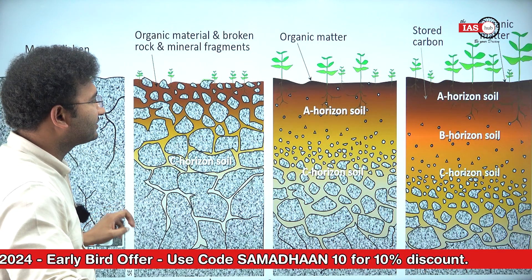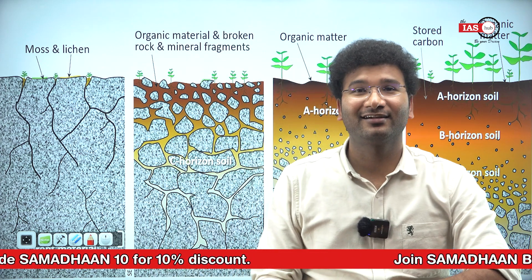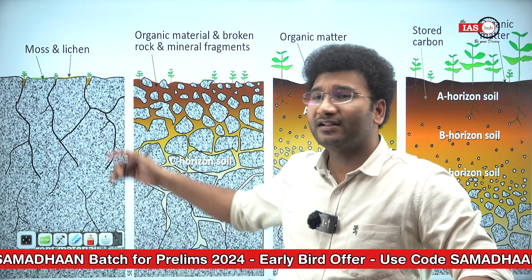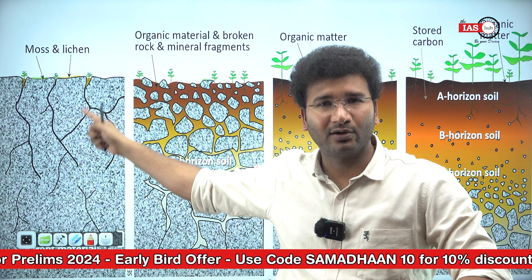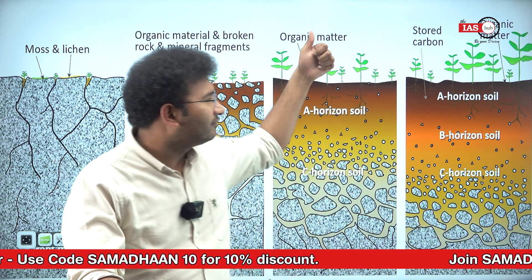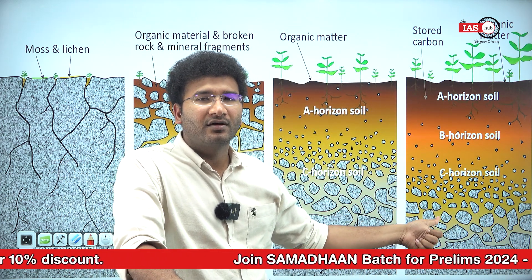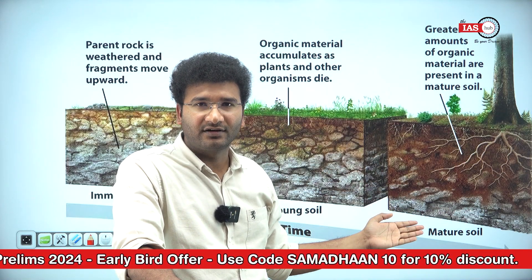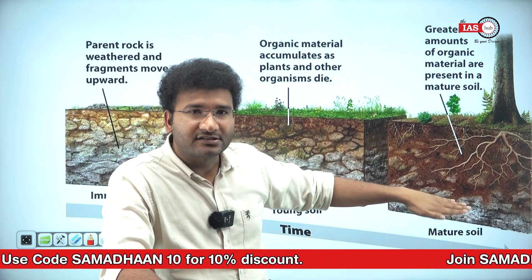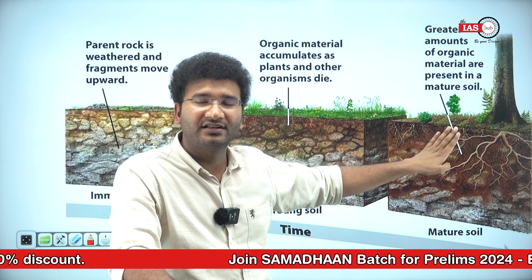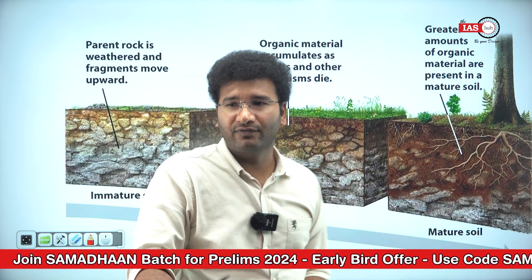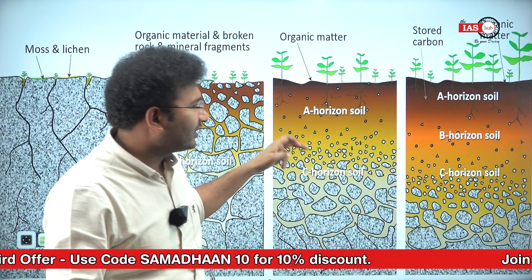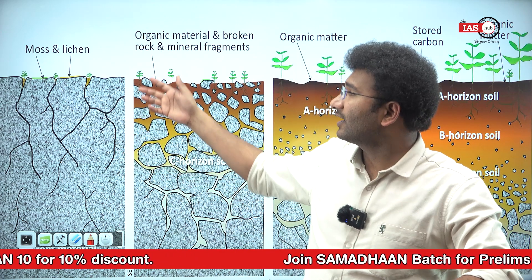The next factor you need to know is time. It takes thousands of years to become soil. Initially there is a parent rock, and this parent rock finally turns itself into a well-developed profiled soil. When you take a layer of soil from the interior of the earth and find different layers, this particular type of soil is called zonal soil. If you do not find any layers, it is called azonal soil. Over a period of time, certain actions are happening over the rock.